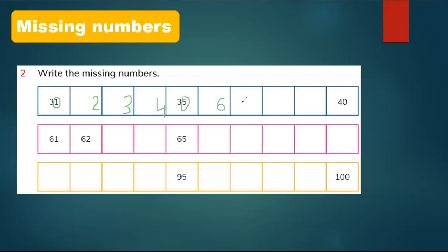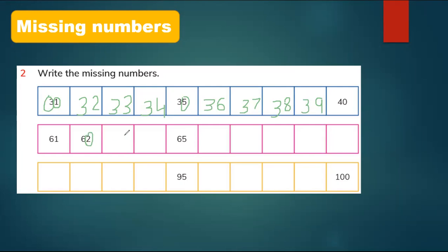After 1 comes 2, after 2 comes 3, after 3 comes 4, after 4 comes 5, after 5 comes 6, after 6 comes 7, 7, 8, and 9. The tens will be the same — the tens in the row don't change. Here the ones change but tens don't: 61, 62, 63.